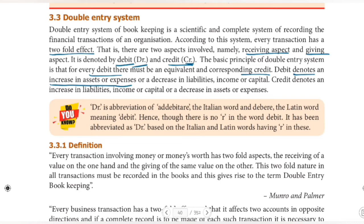Now for credit — what does credit mean? Credit means an increase in liabilities. When we credit, liabilities increase. It also represents income or capital increase. Credit also means a decrease in assets and expenses. So that is the credit side.